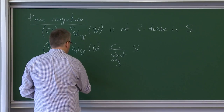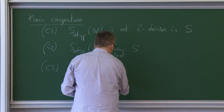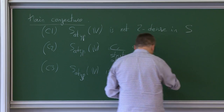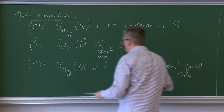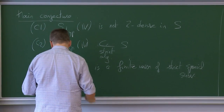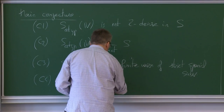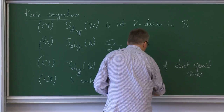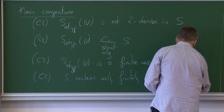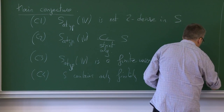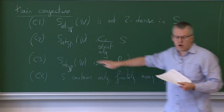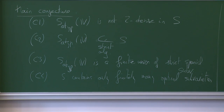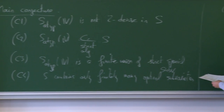C3 is that S-atypical of V is a finite union of strict special sub-varieties, which of course are atypical and in fact optimal — these are the maximal ones. And C4 is that S contains only finitely many optimal sub-varieties. These are just different ways of thinking of the same kind of problem, either in terms of an algebraicity statement, or proving by some counting that you have only finitely many. I claim it's easy to check that C1 is equivalent to C2, to C3, and so on.